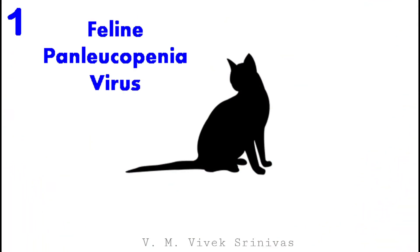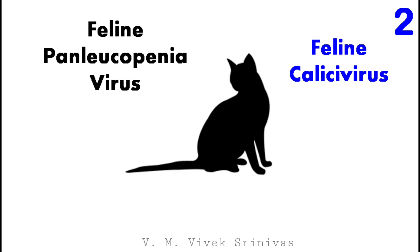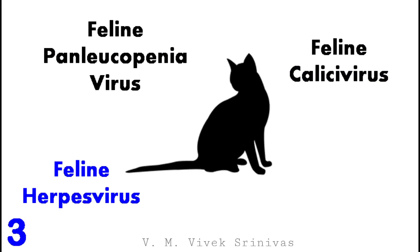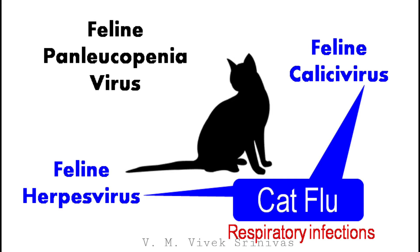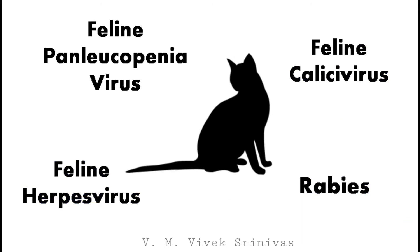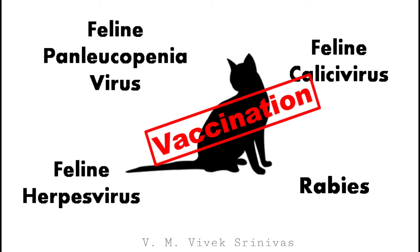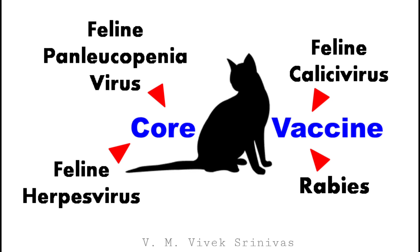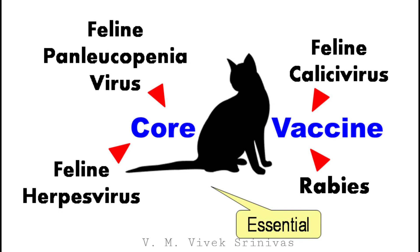1. Feline Panleukopenia Virus. 2. Feline Calicivirus. 3. Feline Herpes Virus. Feline Calicivirus and Herpes Virus are the causative agents for cat flu, causing respiratory infections. And lastly, 4. Rabies. For these four infections, vaccination in kittens is very important. The vaccine against these four infections is considered a core vaccine — that is, all cats should receive the vaccine against these four infections regardless of circumstances.